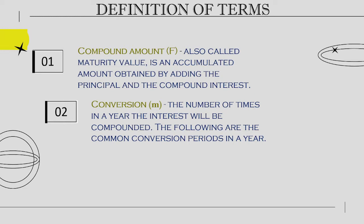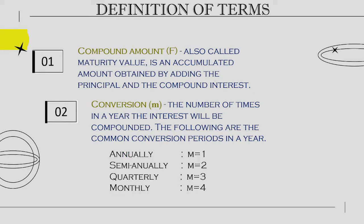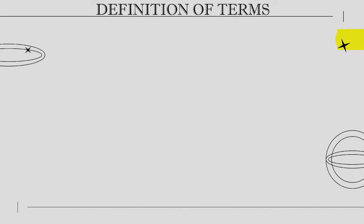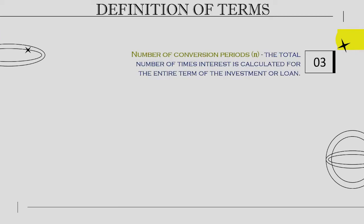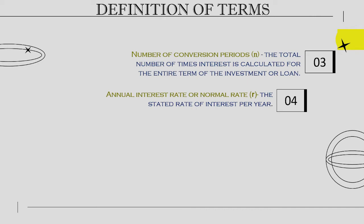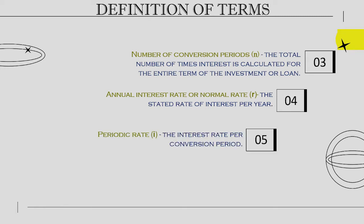The following are the common conversion periods in a year: Annually — 1, Semi-annually — 2, Quarterly — 3, Monthly — 4. Number of conversion periods is the total number of times interest is calculated for the entire term of the investment or loan. Annual interest rate, or nominal rate, is the stated rate of interest per year. Periodic rate is the interest rate per conversion period.